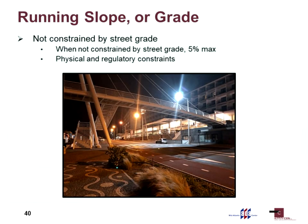When the pedestrian access route is not constrained by the street — for example, an independent pedestrian bridge — the maximum running slope is 5%. You'll still want a little cross slope for drainage, but there's no reason to have a full 2%. Sometimes regulatory constraints, like clearance requirements for trucks under the bridge, make this difficult to meet. If your sidewalk just goes beside a road on a bridge, you're still constrained by that road.